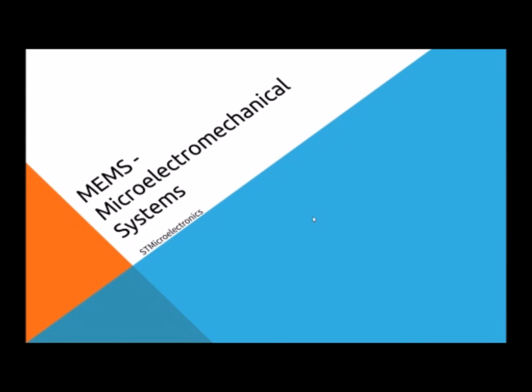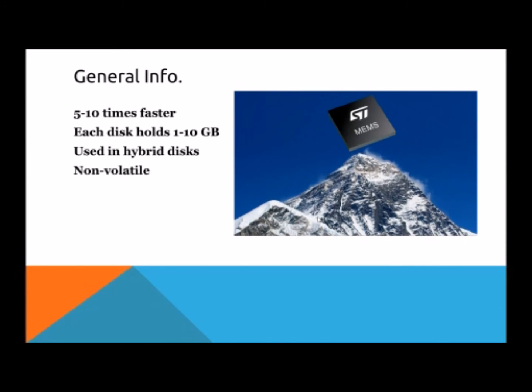We're going to talk about Microelectromechanical Systems now, or MEMS for short. ST Microelectronics is the main company behind this type of architecture. Here's some general information about MEMS. Currently MEMS is 5 to 10 milliseconds faster than current hard drives. This is very significant, but the problem is that it produces a lot of heat and requires a lot of power. So most MEMS disks only are 1 to 10 gigabytes in size. This being said, they're used in hybrid disks to allow for the faster read and writes and used as a buffer with normal hard drives behind it for the larger caches. MEMS is also non-volatile.